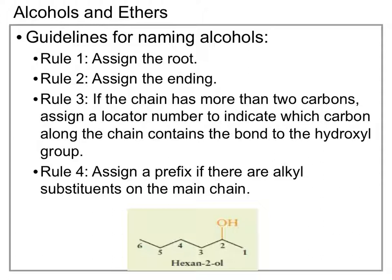When we're naming alcohols, our basic naming conventions are the same as they were when we were naming hydrocarbons. First, we're going to assign our root based on our longest continual carbon chain. We will then assign our ending, and in this case our ending is going to be -ol, which is our ending for alcohols. We also need to identify where the alcohol is attached. And if there are any different alkyl substituents on the main chain, we will assign prefixes accordingly, just as we did with our branched-chain hydrocarbons.